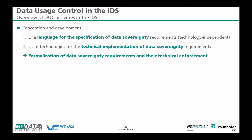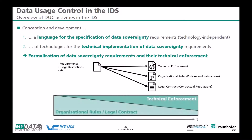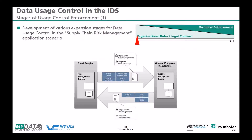We have a big formalization that can be parted into technical enforcement, organizational rules, and legal contracts. Legal contracts and organizational rules are necessary because not everything can be technically enforced. We are starting from a position where the IDS has only organizational rules and legal contracts, and the direction we want to go is to incorporate more and more technical enforcement into the system, reducing the reliance on organizational rules and legal contracts.